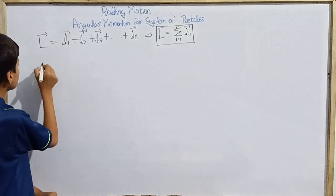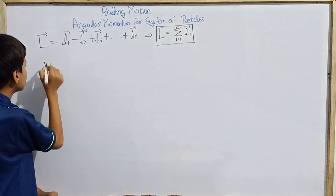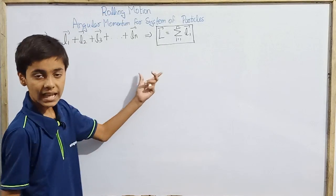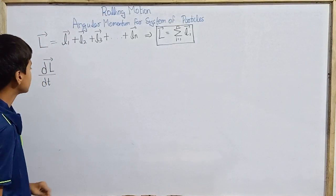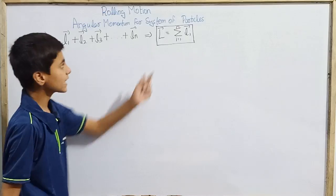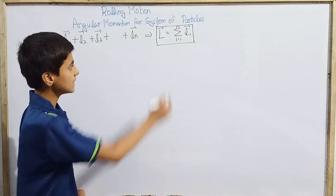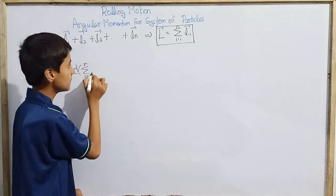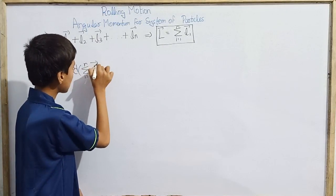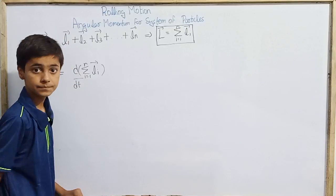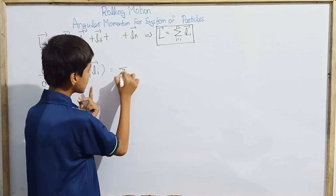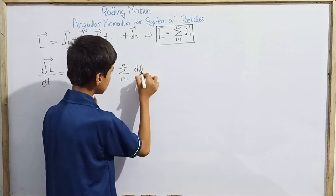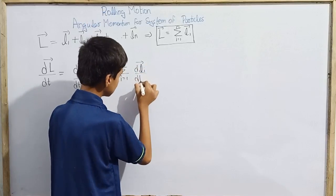We have to describe this change, so we take derivative with respect to time. Total angular momentum we take derivative with respect to time. We will get d of vector L over dt equals d of sigma from i equals 1 to n vector Li over dt, which equals sigma from i equals 1 to n, d of vector Li over dt.